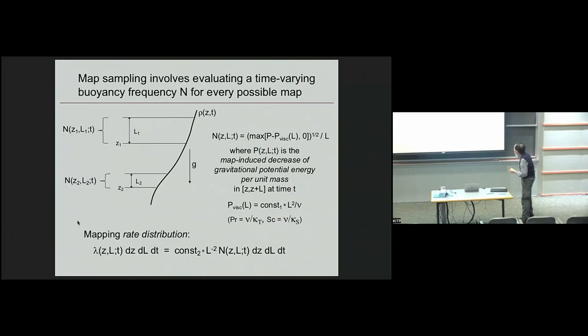Of course, if it's stable, then it'll be negative, and therefore the map's forbidden. Once you have this, you can plug them into this distribution, and then you just sample from this distribution.